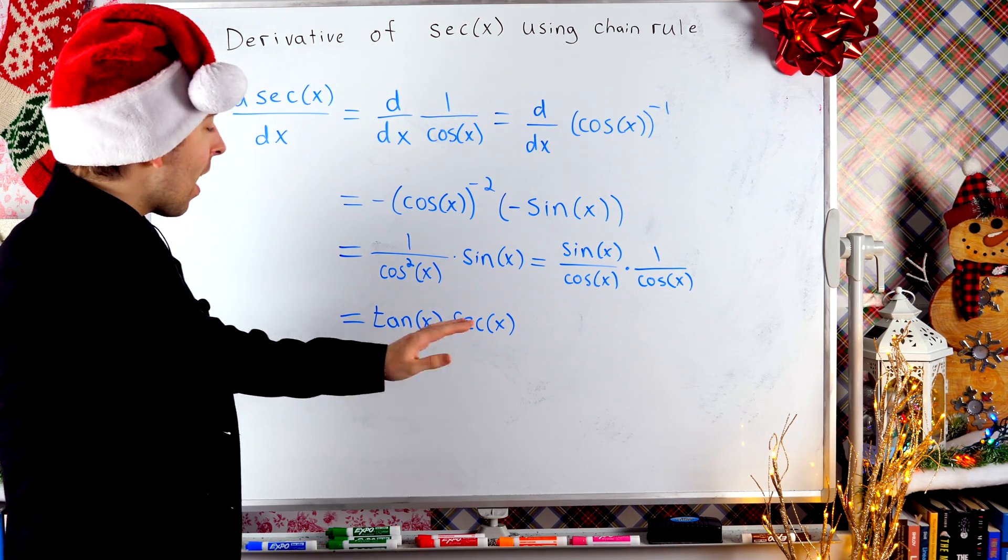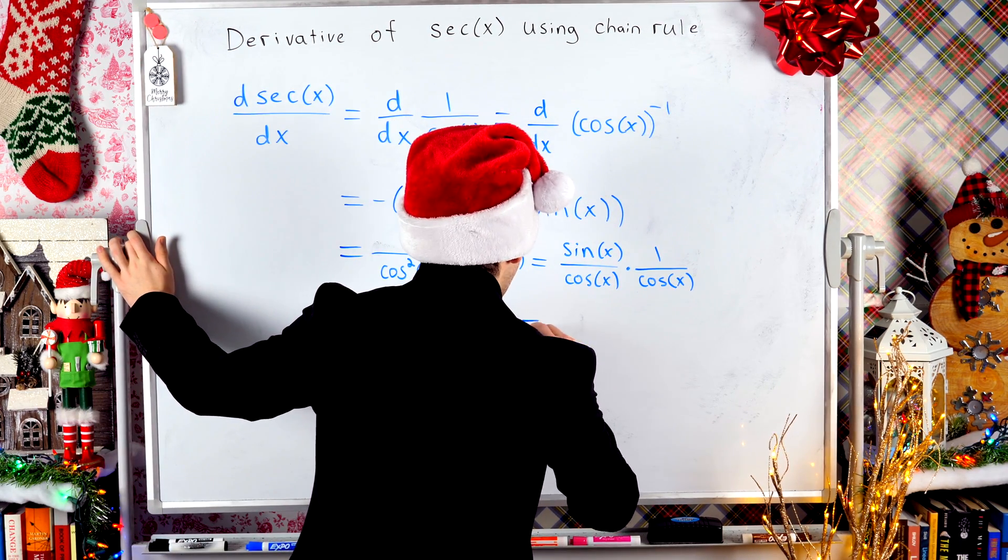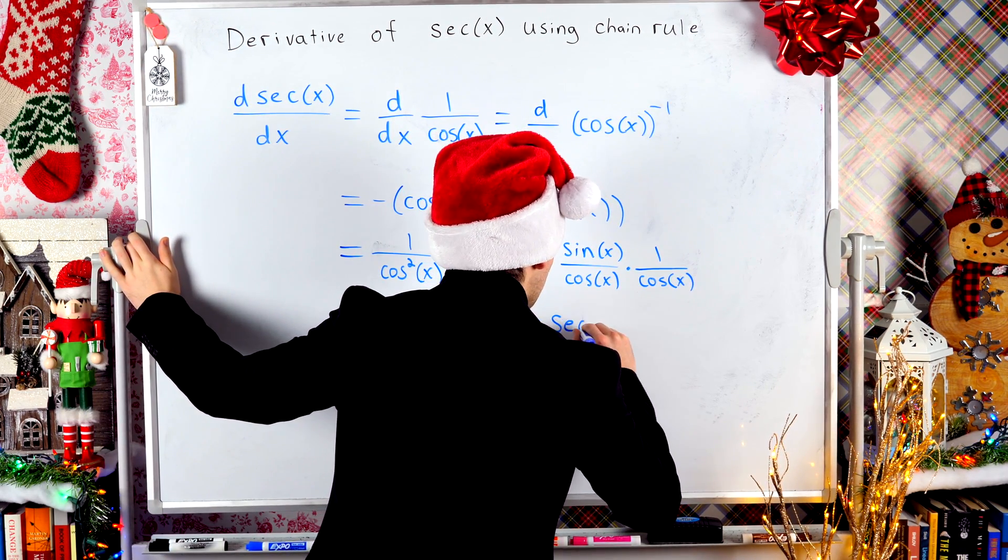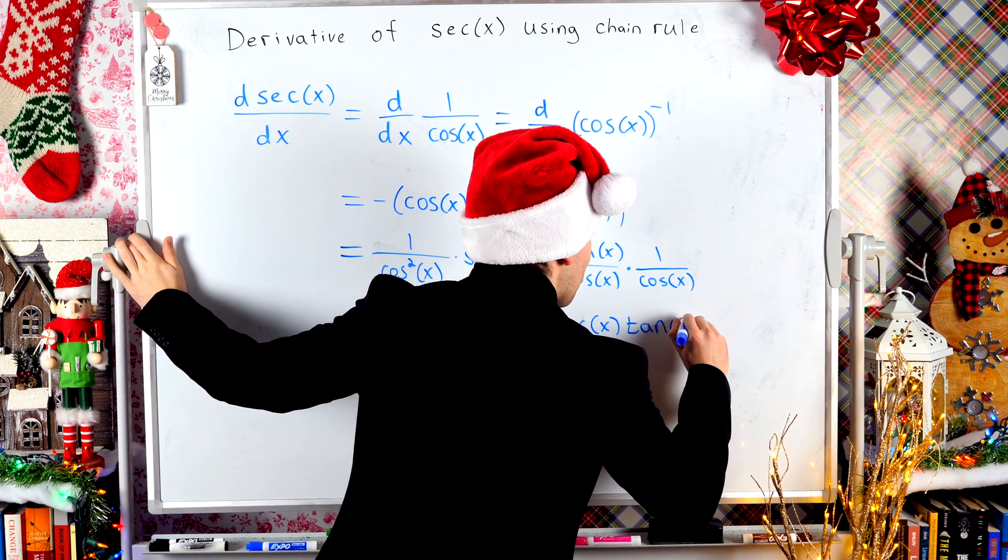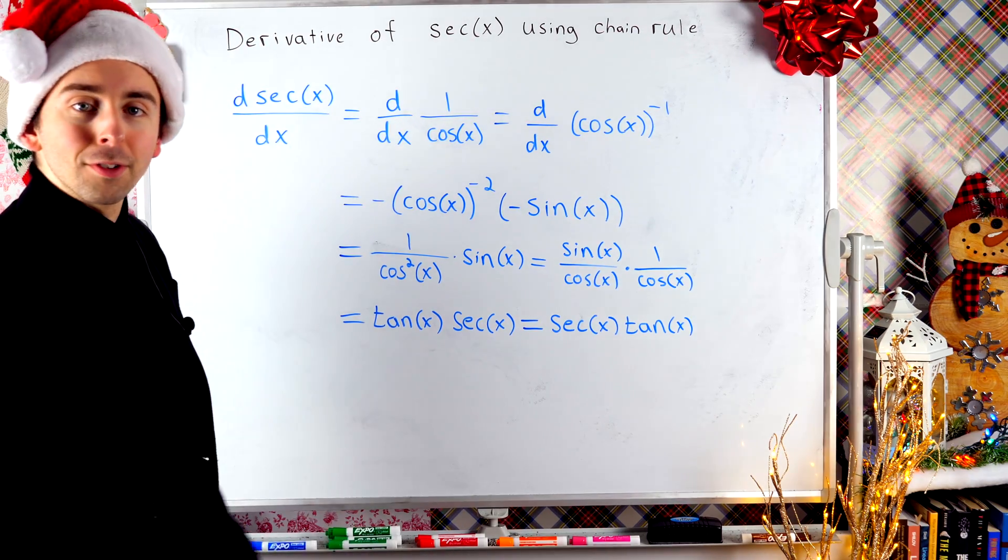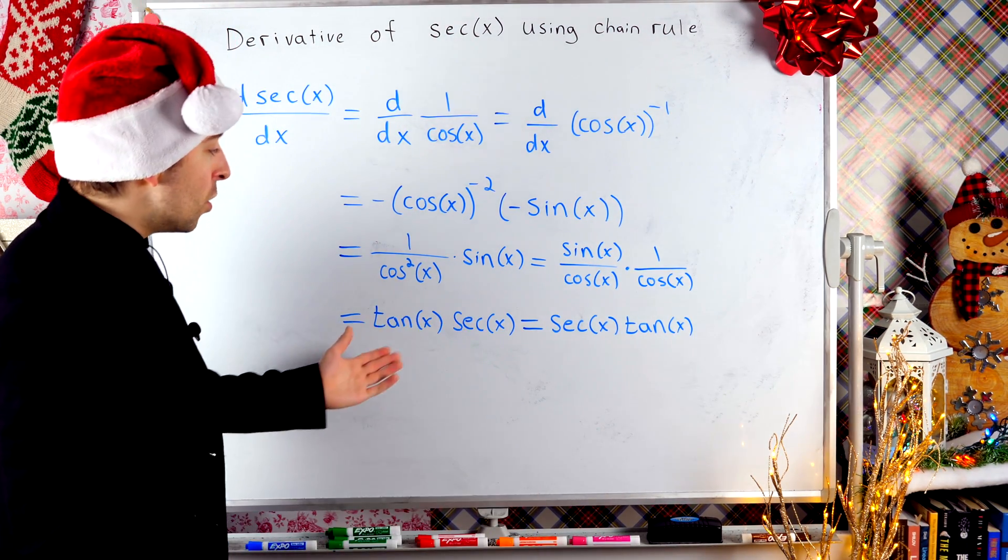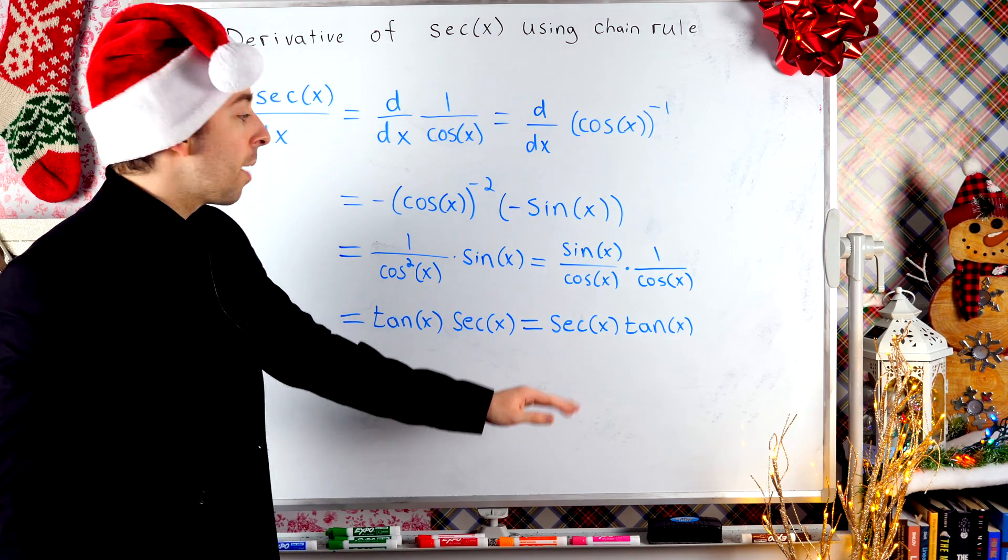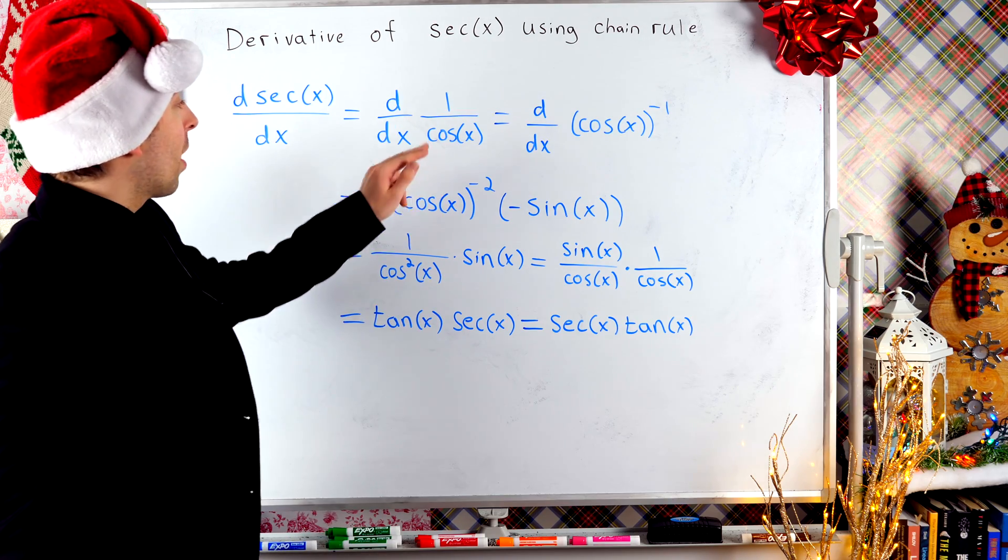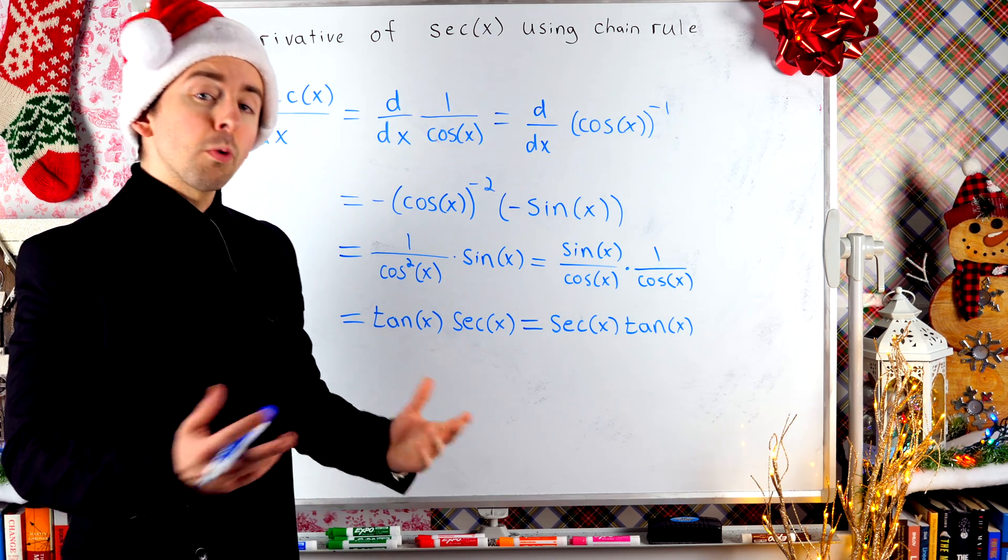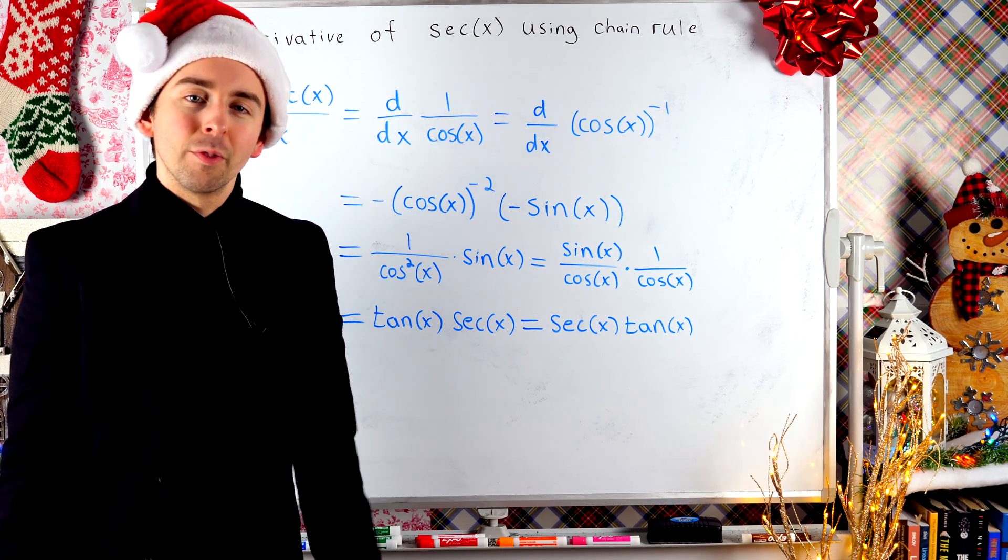For some reason, though, I prefer to write this in the other order. So I'm just going to finish it off by rewriting it as secant x times tangent. Of course, the order of multiplication doesn't matter. It's kind of up to personal taste. So that's how you take the derivative of secant using the chain rule. You end up with secant times tangent. Again, you could go ahead and try finishing this problem with the quotient rule. If you're curious about that, you'll get the same thing if you do it right.